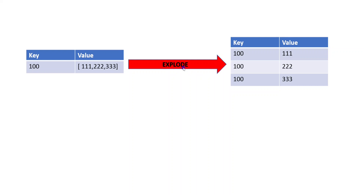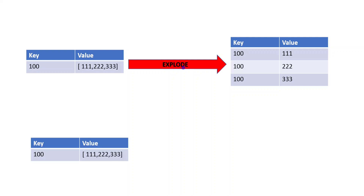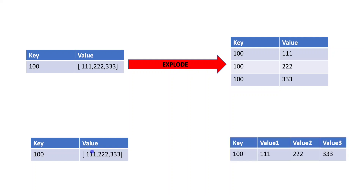I have already posted a video about the explode function. This time the requirement is different. For this DataFrame with an array data type containing a list of elements, instead of converting these elements into separate rows, I have to convert them into separate columns. So the elements should be separated like column value one, value two, value three. I'm going to explain how to achieve that in this tutorial.